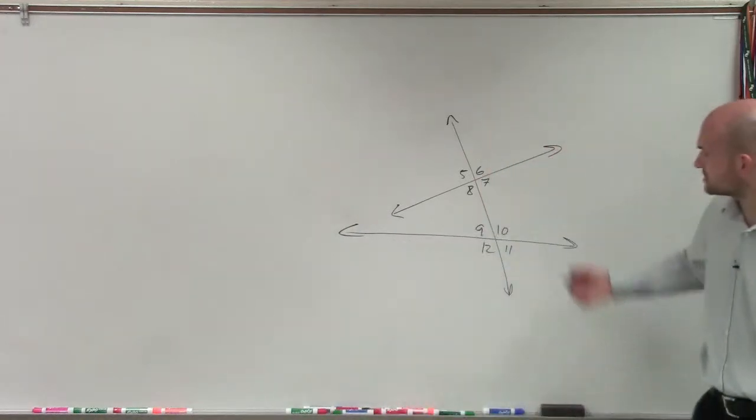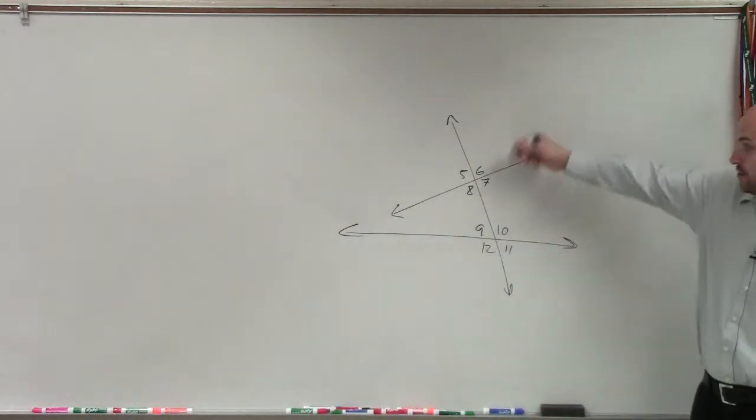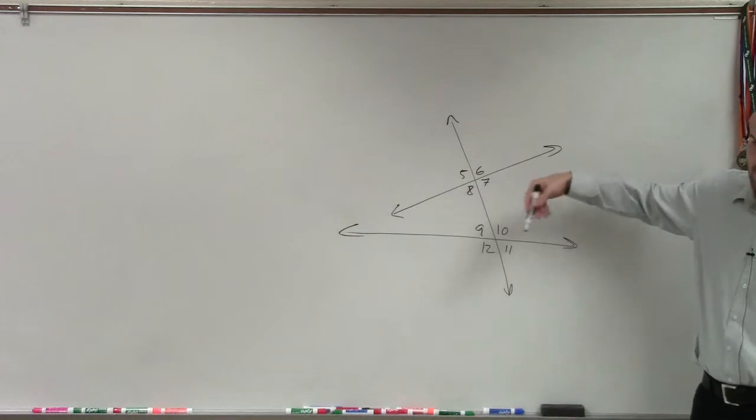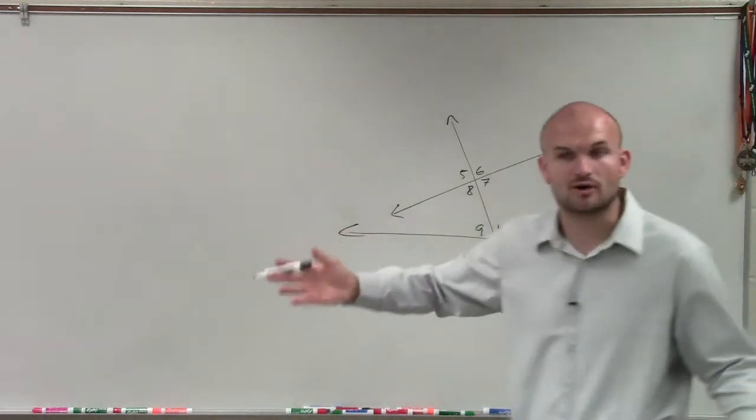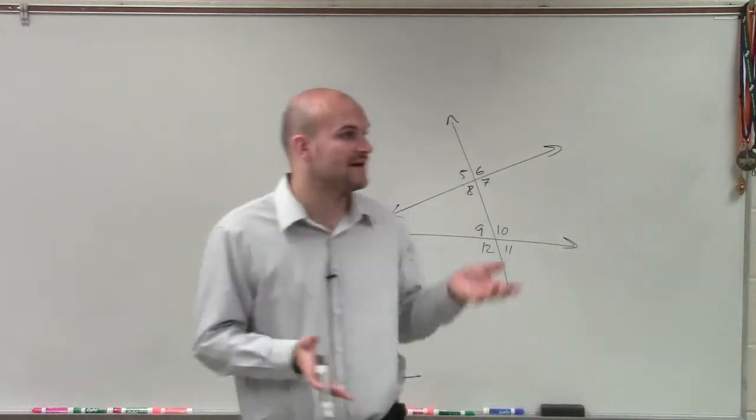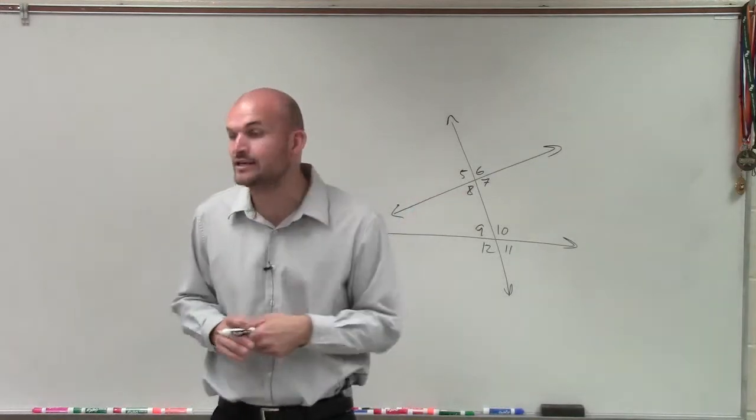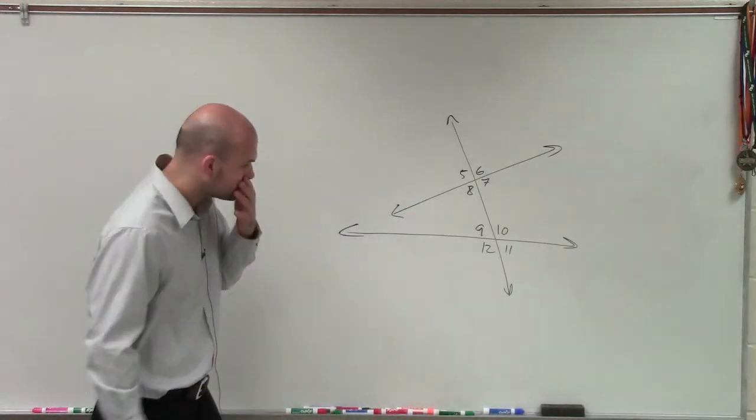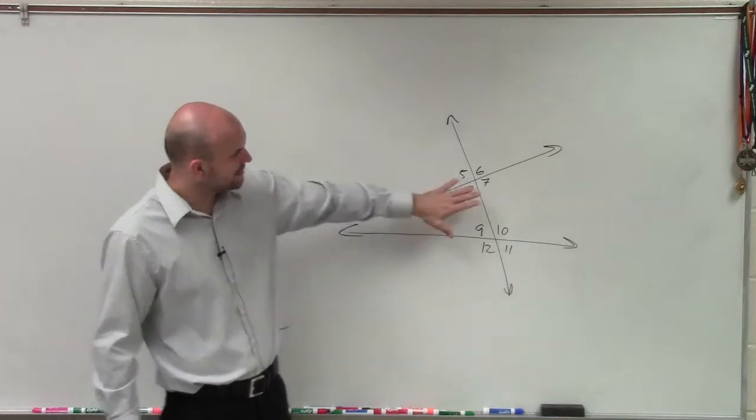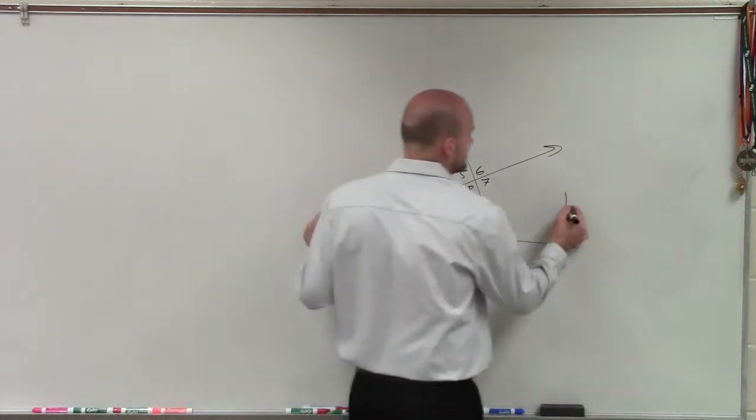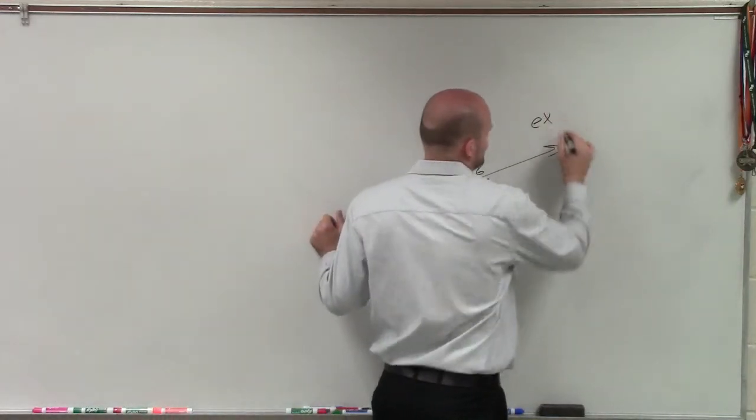So if we just go and look at this, we have angle 7 and angle 11. Now, I know we obviously don't have parallel lines here. But we don't need parallel lines if we have our angle relationships. Because our angle relationships happen when we have a transversal that's intersecting two or more lines.